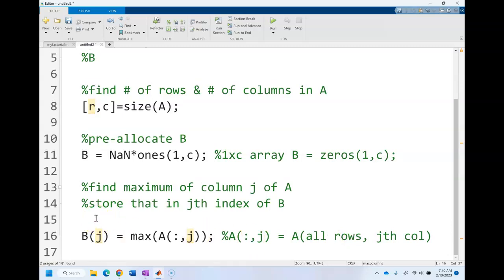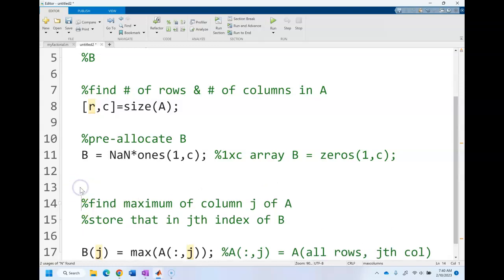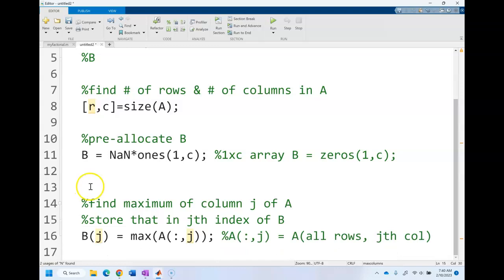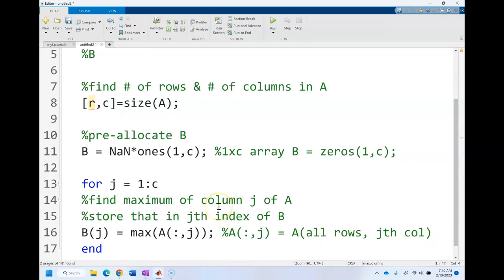At this point it's saying, well, what is j? That's where our loop comes in. We're going to say for j equals what do we want to start j with? We're going to start j with one, because we're starting with the first column and we want to go all the way to the last column, which how many columns are in A? C columns are in A. I can end my for loop.